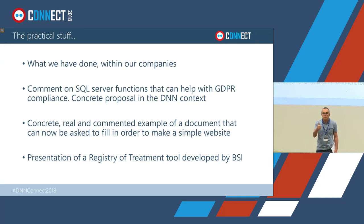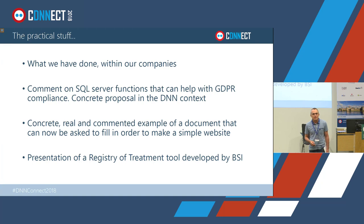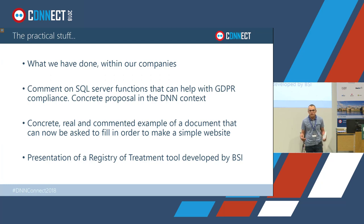If you only have time to read one article, read Article 32. It's the article for us — the geeks — and it's fun because 32 is a binary number, 2 to the power of 5, so there must be some humor in Brussels. Article 32 explains what must be done in terms of security, and lawyers don't understand that area — that's where we can enter the game, because they don't know about encryption, backup, or restore.